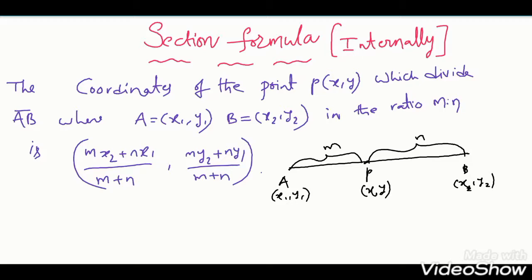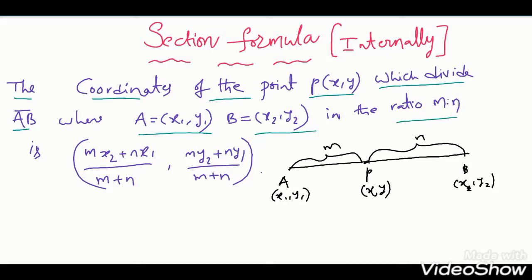What is the statement of section formula? The coordinates of the point P which divides the line segment AB, where A is (x1, y1) and B is (x2, y2), in the ratio m:n is (mx2 + nx1)/(m+n) comma (my2 + ny1)/(m+n). This is the statement.